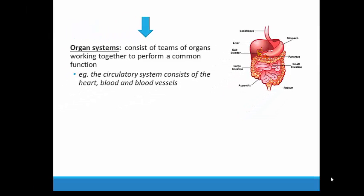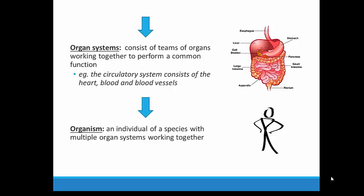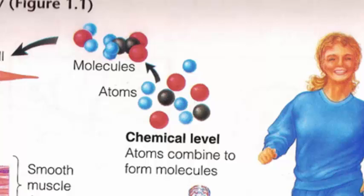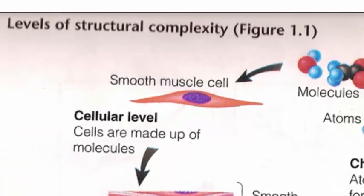Finally, all of these organ systems come together to form an organism. The levels of organization in the body explain how we can organize the cells in ways that allow important tasks to be completed. So here's a recap: everything in the human body is made up of atoms, which come together to form molecules. These molecules form more complicated structures, which are then used to create cells. In the case of this diagram, the cells are smooth muscle cells, which we will learn more about later in this lesson.